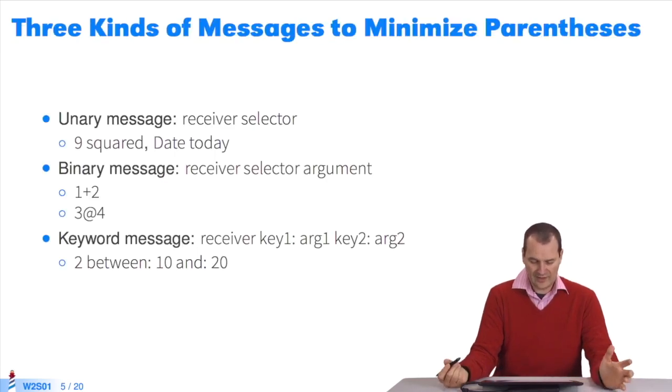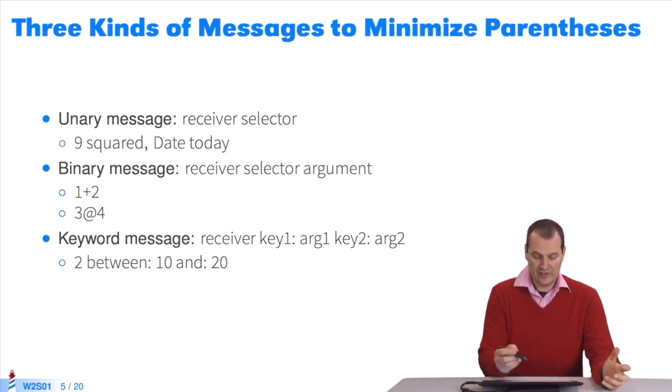In Pharo's syntax, there are three types of messages to minimize the number of parentheses. They are unary, binary, and keyword messages. Let's see about them.